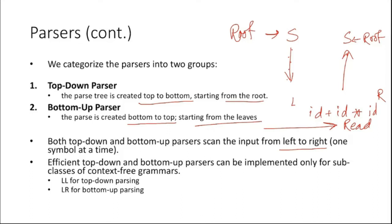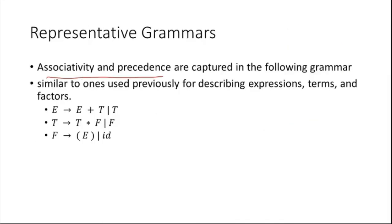Efficient top-down and bottom-up parsers can be implemented only for subclasses of context-free grammars — LL grammars for top-down parsing and LR grammars for bottom-up parsing. Representative grammars: in a CFG for arithmetic expressions, associativity and precedence are captured in the grammar. If you use this grammar to evaluate an input arithmetic expression, the associativity and precedence of the operations are captured correctly.